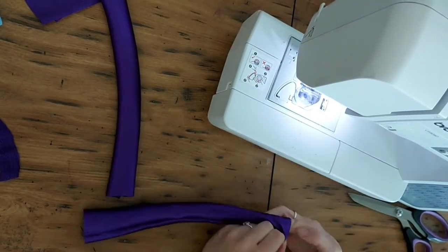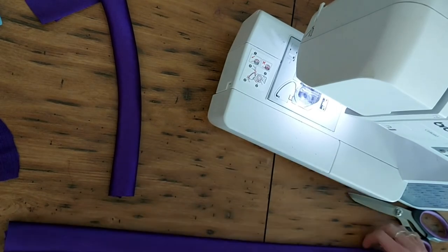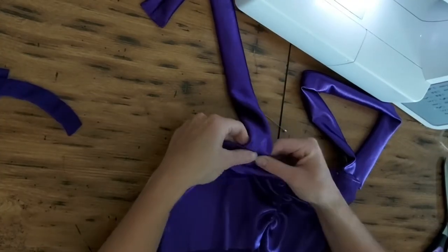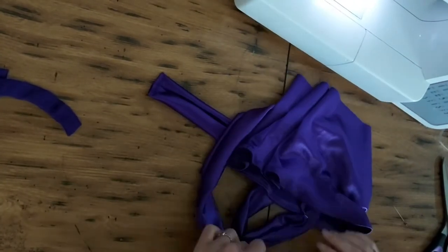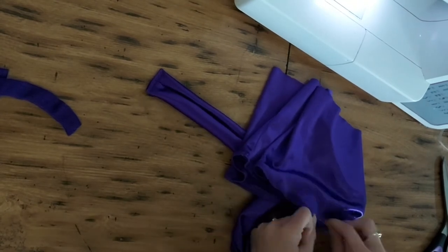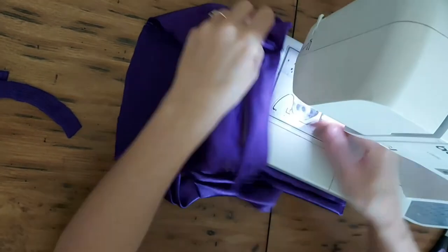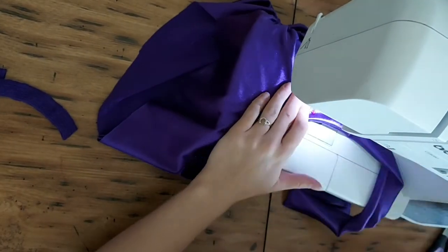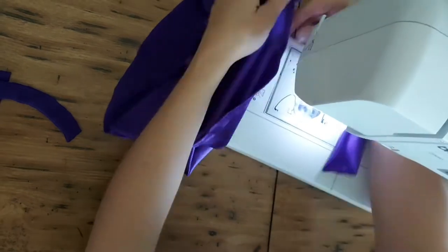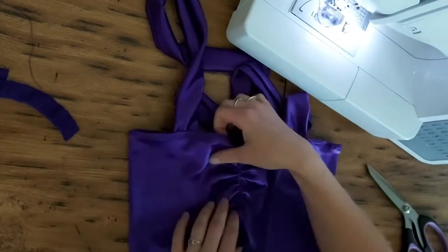Then it's a matter of repeating these steps on the other strap. Once both straps are finished, you can sew them to the front of your shirt. When sewing the straps on, I used a zigzag stitch a couple of times back and forth to make sure that the straps were well secured to the dress. And at this point, the top half of the dress is complete.